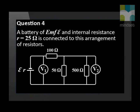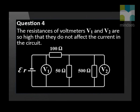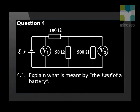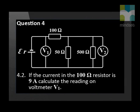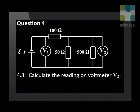A battery of EMF E and internal resistance R of 25 ohms is connected to this arrangement of resistors. The resistances of voltmeters V1 and V2 are so high that they do not affect the current in the circuit. Explain what is meant by the EMF of the battery. If the current in the 100 ohm resistor is 9 amperes, calculate the reading on voltmeter V1. Calculate the reading on voltmeter V2. Calculate the EMF of the battery.